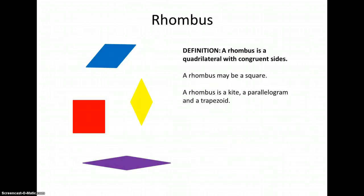A rhombus is a quadrilateral with congruent sides. Here we don't care about the angles again. We only care that all four sides measure exactly the same length. A rhombus might be a square, but it's always a kite, a parallelogram, and a trapezoid.